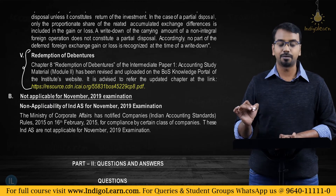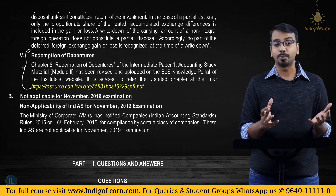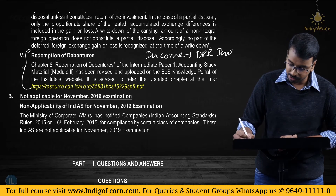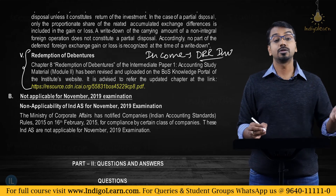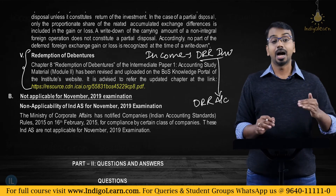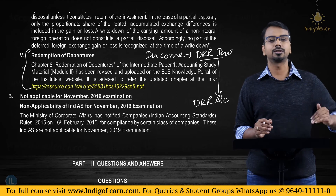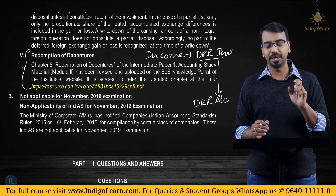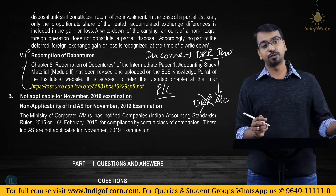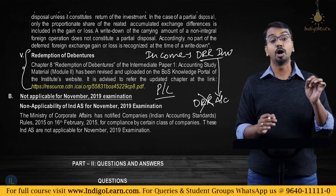Another change the institute has put out is in the redemption of debentures chapter. Earlier, whatever income was earned on debenture redemption reserve investments — whether interest or capital gains — those used to be transferred to the DRR account. Now, a better presentation is to transfer that income into the profit and loss account, since the interest income earned on DRR investments is not actually being reinvested. So now, instead of giving it to DRR, any interest, any income, or any gain on sale of DRR investments will be captured in the profit and loss account.